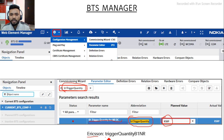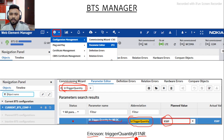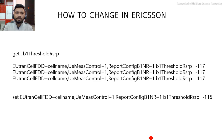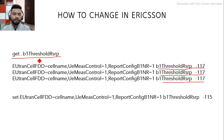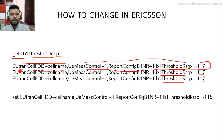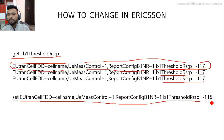In Ericsson, to check or change the B1 threshold, log in to your site and run the command get.B1ThresholdRSRP. This will show the B1 threshold value for all cells. For the cell you want to change, run the command set, then paste the full cell path copied from the get command output, and change the value — for example, from minus 117 to minus 115 — then press Enter. The value will be updated.